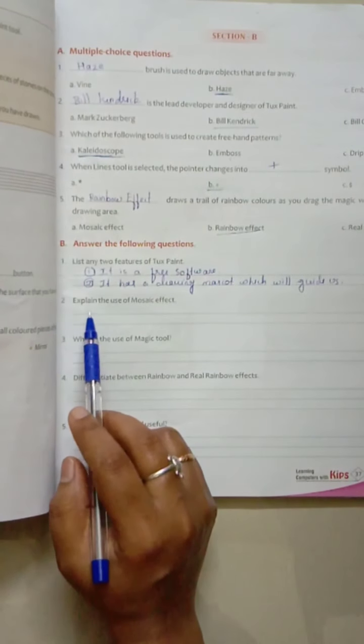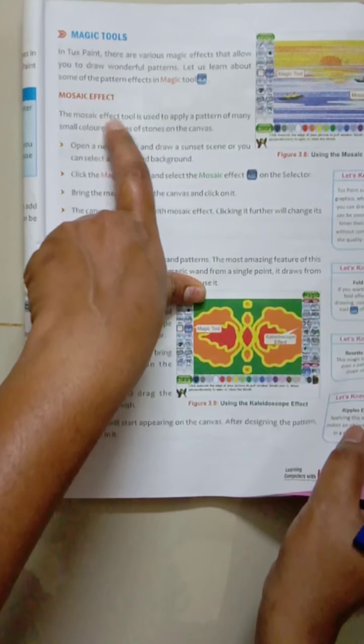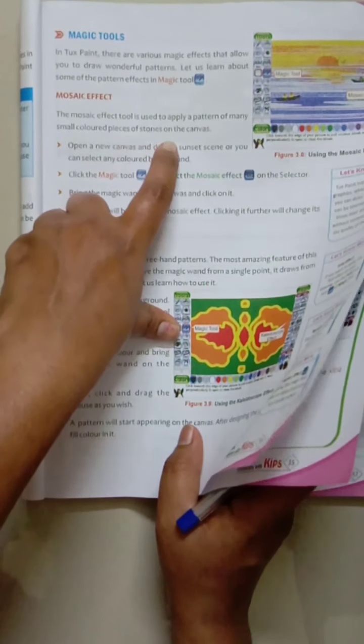The mosaic effect tool is used to apply the pattern of many small colored pieces of stone on the canvas. So the same answer can be written here. Explain the use of mosaic tool: it will help you to apply the pattern of many small colored pieces of stone on the canvas.